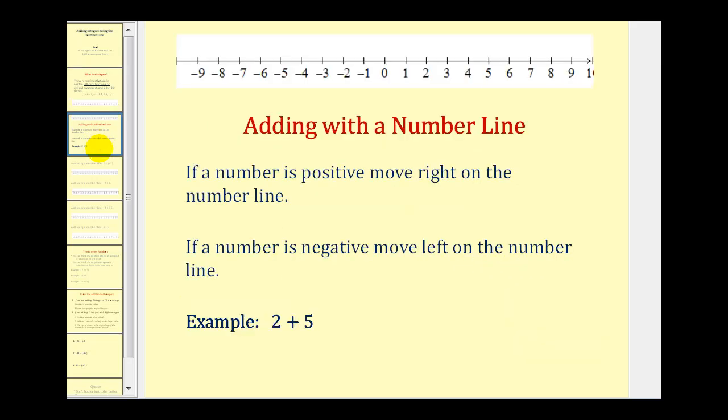In order to add integers using a number line, if a number is positive we'll move to the right on the number line and if a number is negative we'll move left on the number line. That should be pretty logical because the positive integers are on the right side of the number line and the negative integers are on the left side of the number line.